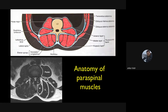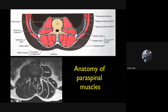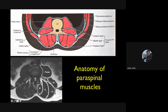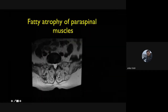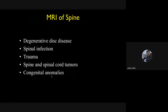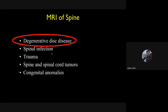The paraspinal muscles are important structures to assess on MRI — including the psoas, quadratus lumborum, multifidus, and erector spinae. In patients with chronic lumbar disc disease, there may be atrophy of these muscles due to denervation or age-related fatty changes. Compare normal muscle bulk with significantly fat-replaced muscles — this is significant fatty atrophy of paraspinal muscles, and these patients may need strengthening. MRI is useful for degenerative disc disease, infection, trauma, tumors, and congenital anomalies.